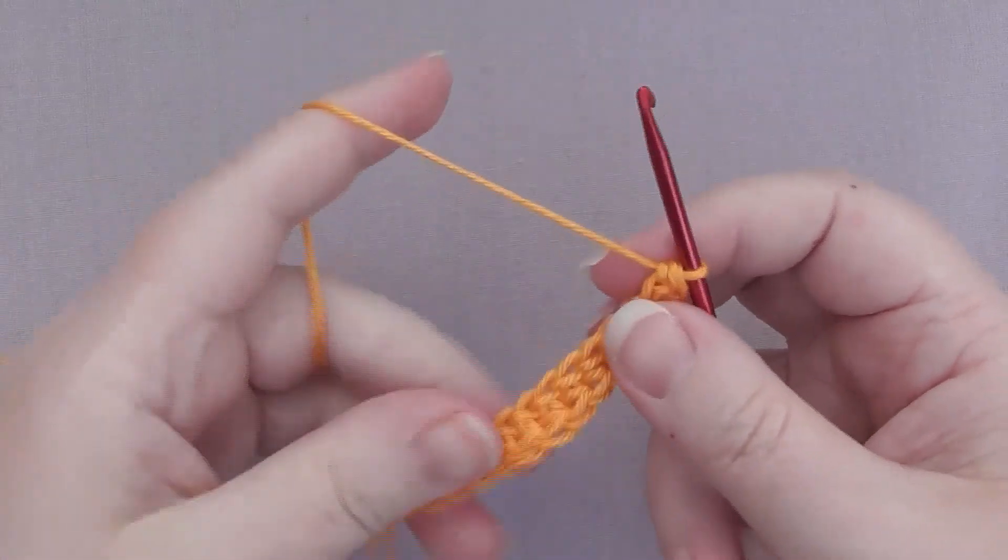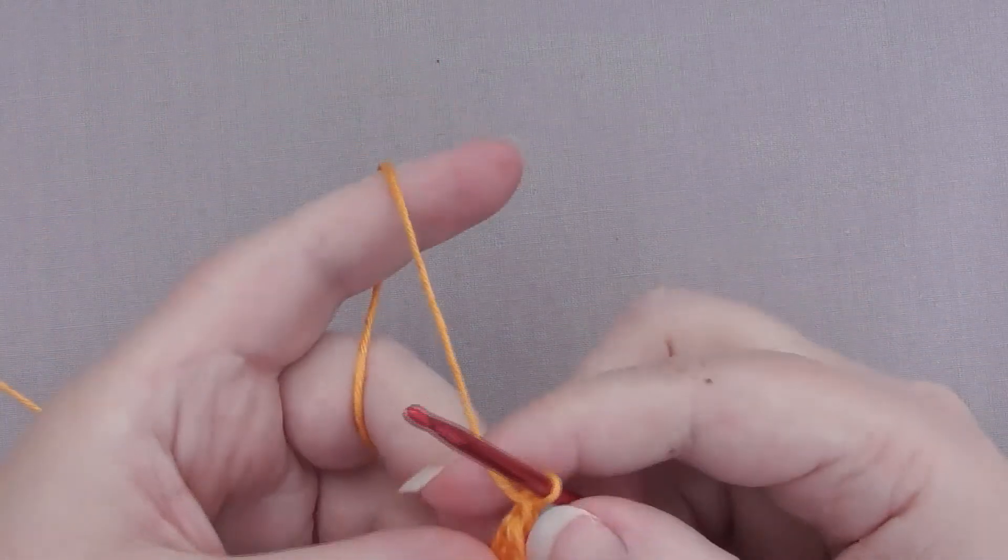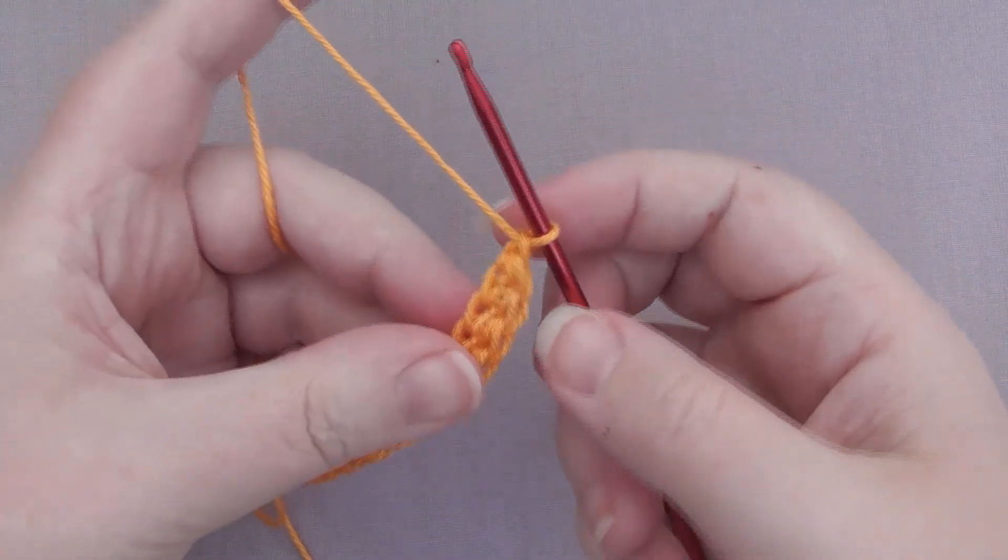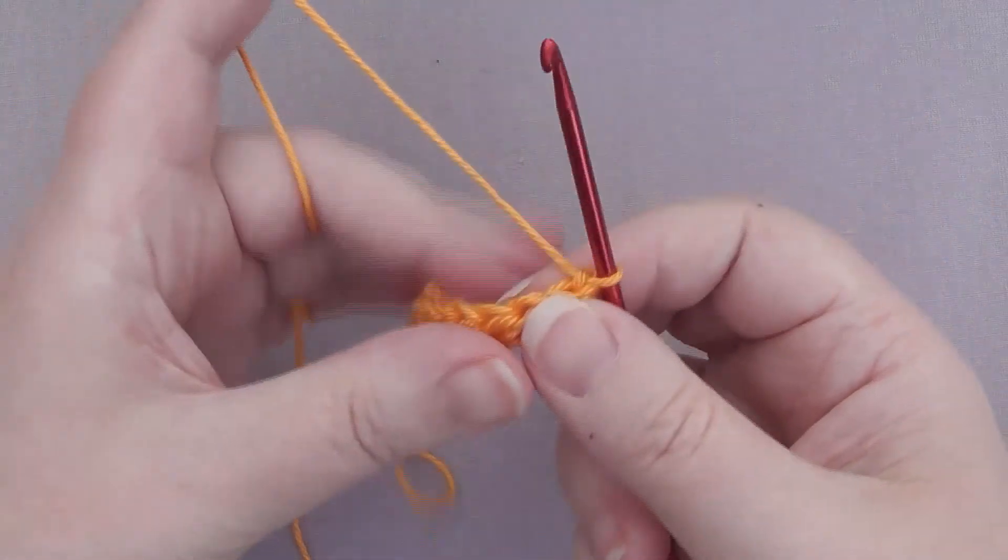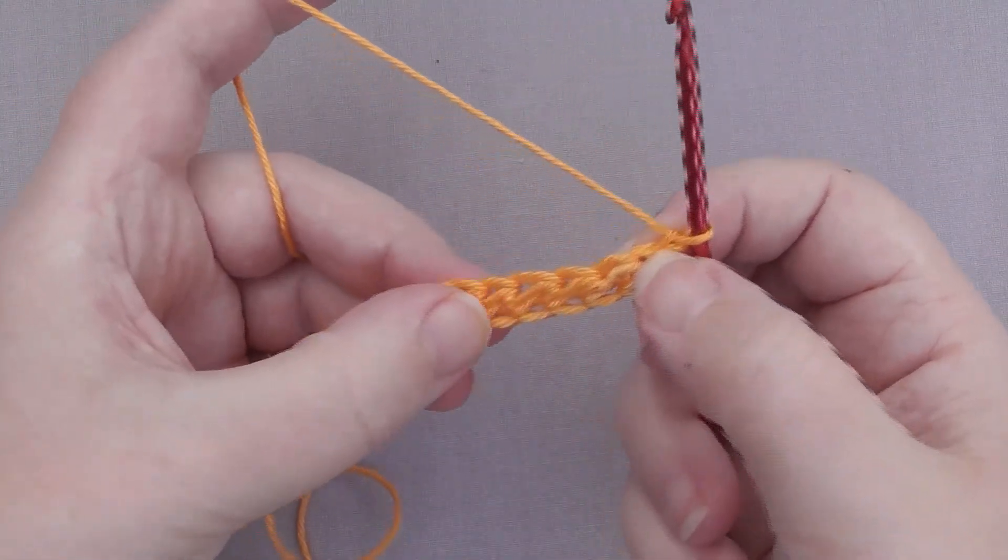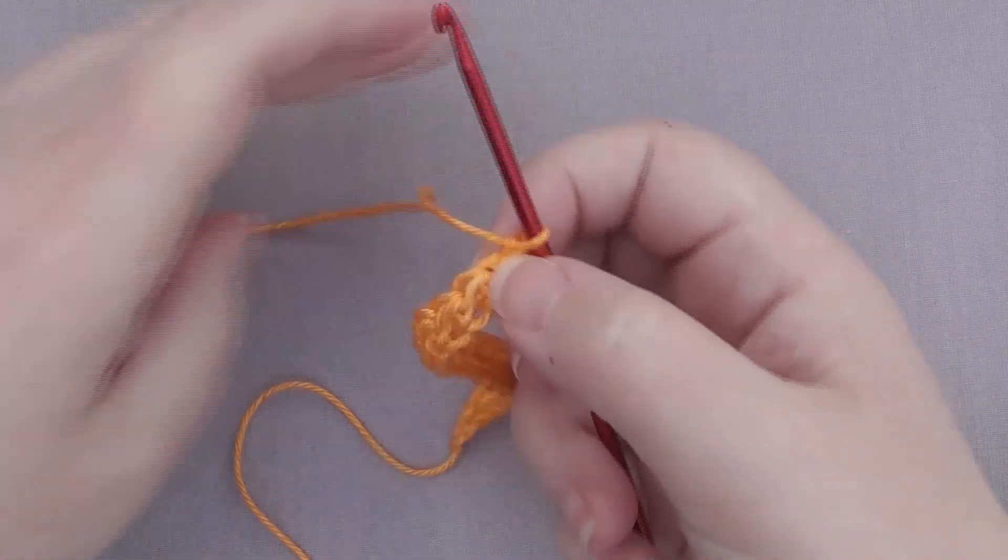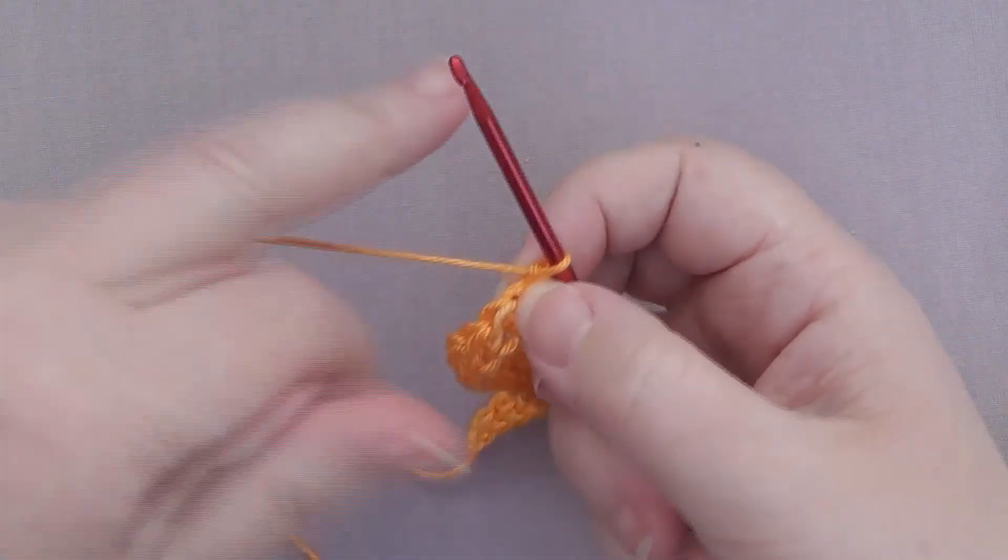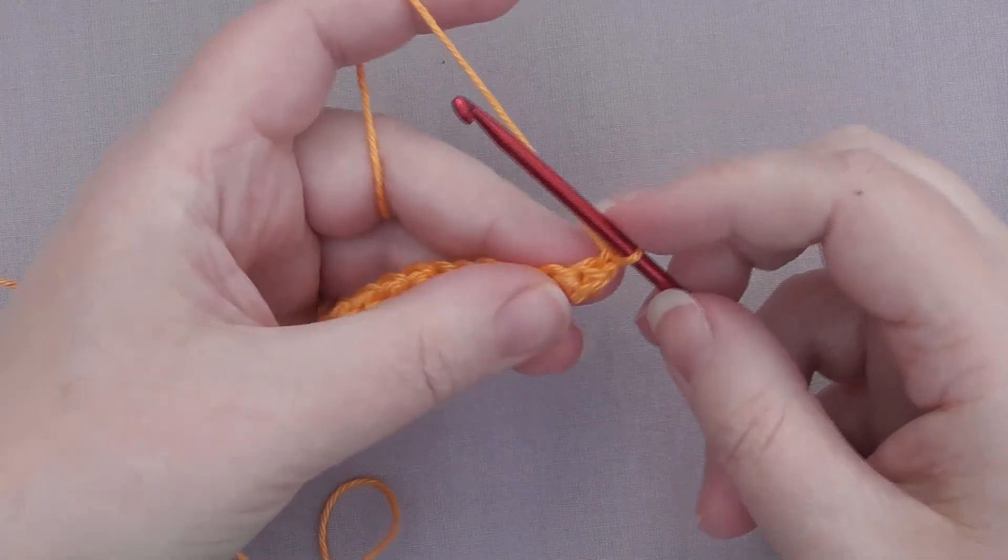Okay, so we've got our 17 stitches done. So we're just going to chain one. And then we're going to turn it over because we're going to work back that way along what is our actual top of our stitches now.